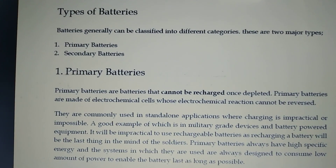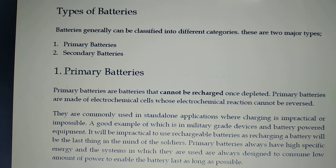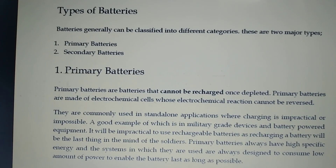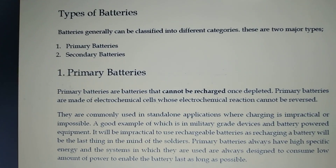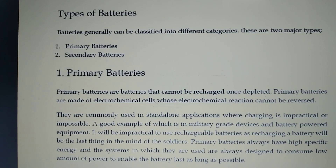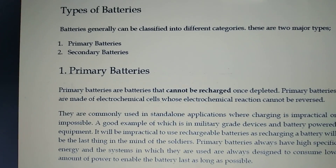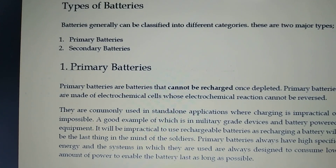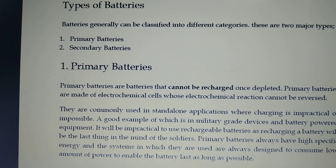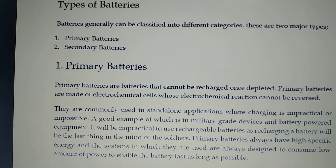Types of batteries: batteries generally can be classified into different categories. There are mainly two major types — one is primary batteries and the other is secondary batteries.